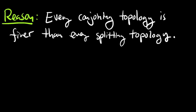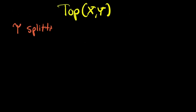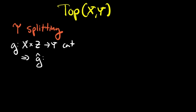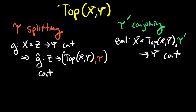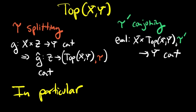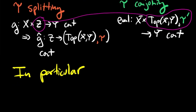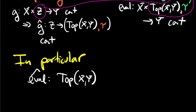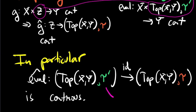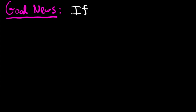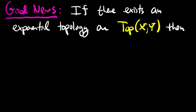The only thing left to complete the argument that exponential topologies are unique is to show that conjoining topologies are finer than splitting topologies. Assume we have two topologies on top(x,y): tau is splitting and tau prime is conjoining. Tau prime being conjoining means the evaluation map from x cross top(x,y) — with topology tau prime — into y is continuous. Think of top(x,y) with the conjoining topology tau prime as a space z, and use the property that tau is splitting to show that the identity map from top(x,y) with topology tau prime into top(x,y) with topology tau is continuous. This means tau prime is finer than tau, completing the proof that if there exists an exponential topology on top(x,y), it is unique.